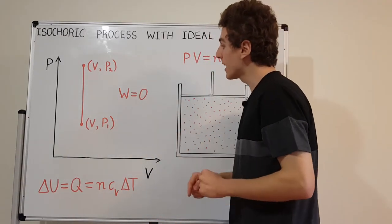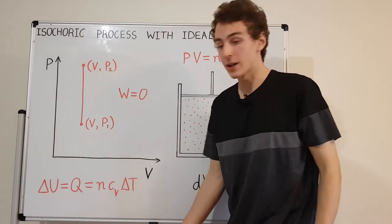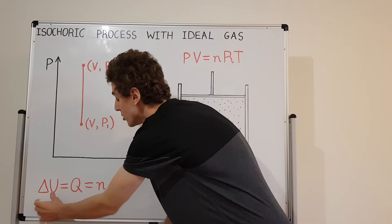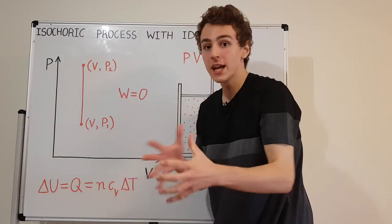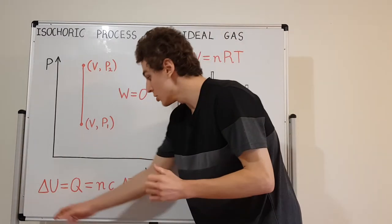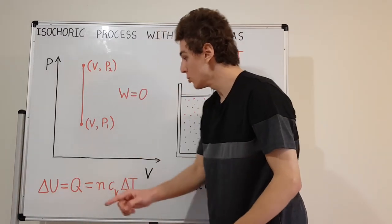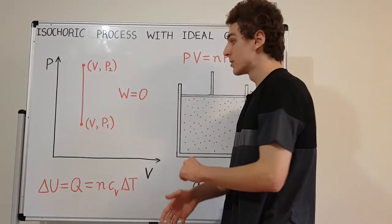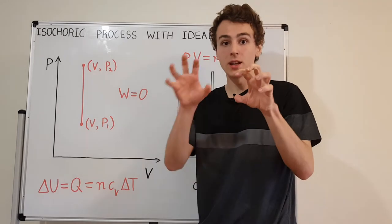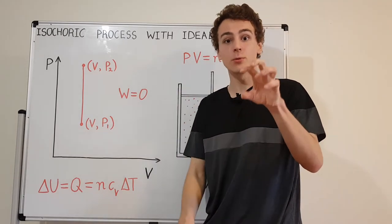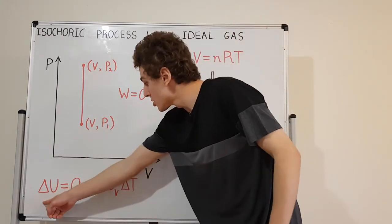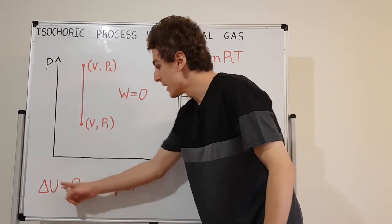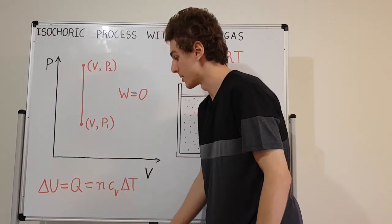We can put that into the first law of thermodynamics. The first law says the internal energy of the system, delta U, is going to change only if you have Q or W. But W is zero, so the sum of Q and W is just equal to Q. Therefore, the change in internal energy is just Q, which is the heat. So the heat is the same as the change in internal energy.